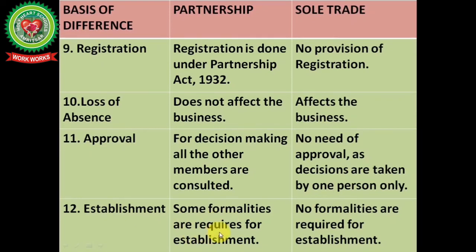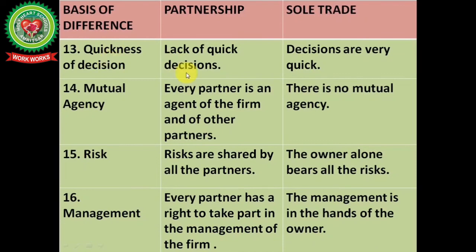Regarding establishment — some formalities are required for establishing a partnership, while no formalities are required for sole trade. Regarding quickness of decisions — partnership lacks quick decisions due to the need for consultation, while sole trade decisions are very quick as only one person is involved. Regarding mutual agency — every partner is an agent of the firm and of other partners, but there is no mutual agency in sole trade.